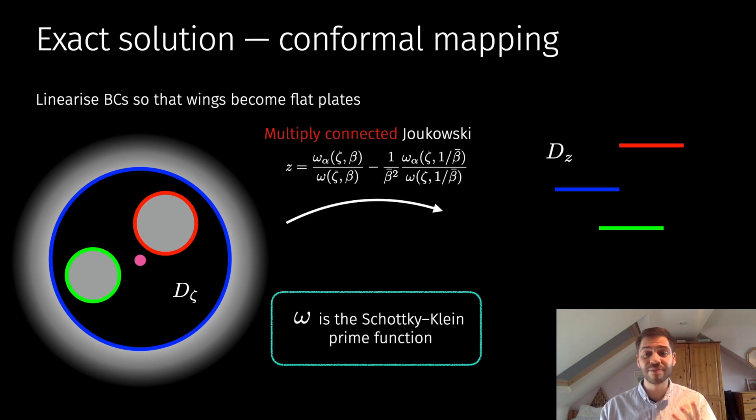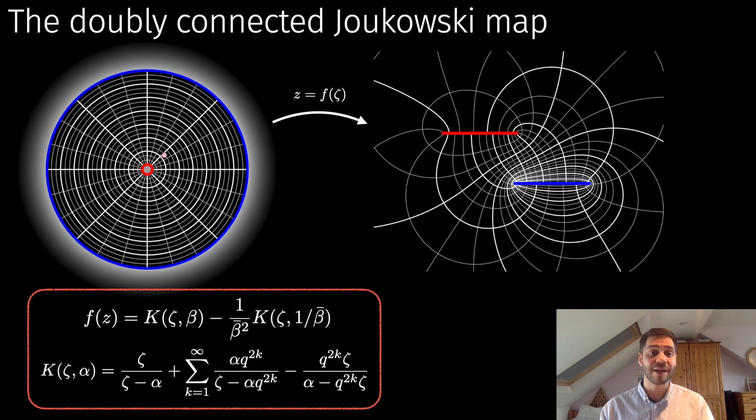To give you some further insight into this map, I'm going to plot the doubly connected Joukowski map. Here we're mapping the annulus to the exterior of two slits. In this case, there's a very simple form for the map given by these Laurent series in this red box. This form is very computationally attractive because this infinite series decays very rapidly, since q corresponds to the radius of the interior circle in the annulus.